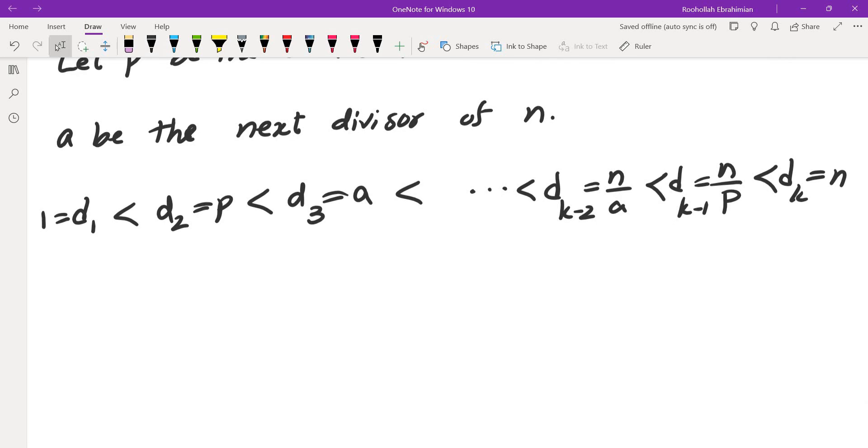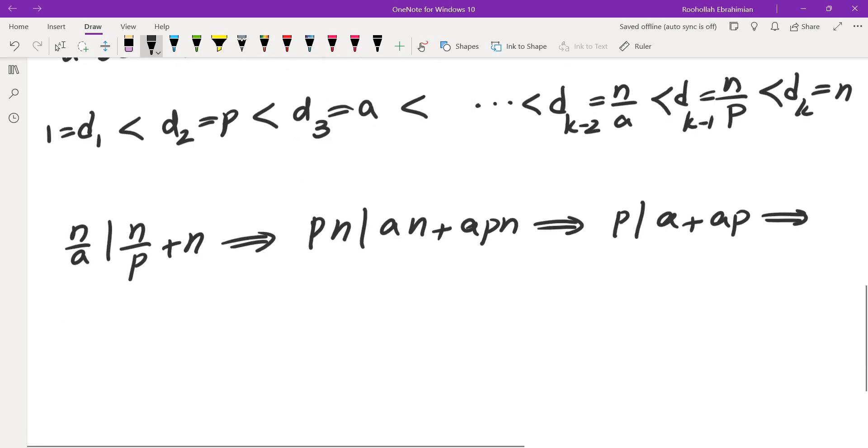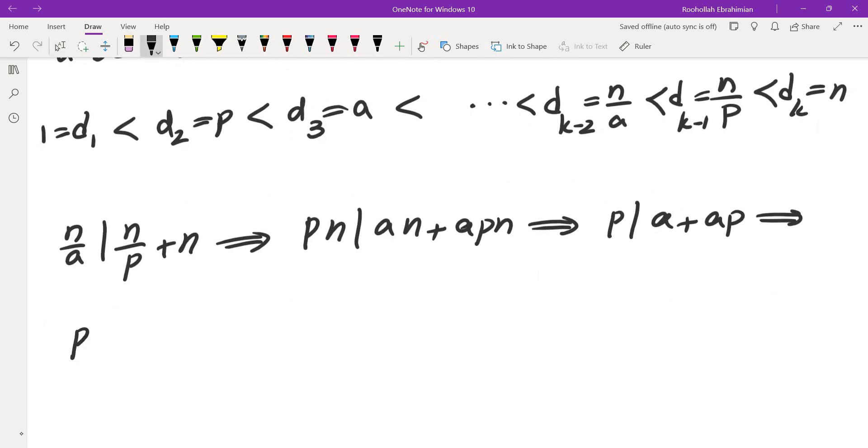Now let's write down the conditions. The last condition gives you n over a must divide n over p plus n. I am going to clear the denominator, so I get pn divides an plus apn. Divide by n, we get p divides a plus ap. So that is kind of similar to what we got above. p divides a times 1 plus p. But p is a prime, it does not divide 1 plus p, so that means p must divide a.